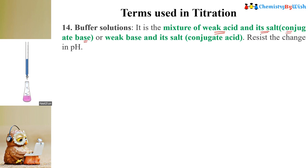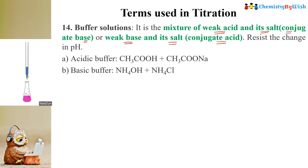If we take a mixture of a weak acid and its salt, that salt is called the conjugate base, and that mixture is overall called a buffer solution. Similarly, if we take a weak base and mix it with its salt — its conjugate acid — we call that a basic buffer. A buffer actually resists the change in pH. If we want to maintain the pH of a solution, we add a buffer solution. Acidic buffer example: acetic acid (weak acid) with sodium acetate (its conjugate base). Basic buffer example: ammonium hydroxide with ammonium chloride.